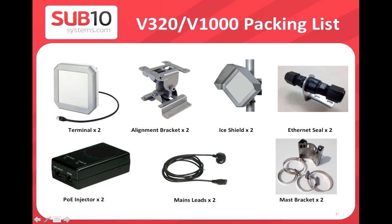Also included is the mast bracket for easy installation. The bracket has four holes connecting to the alignment bracket with screws and nuts, plus a metal ring that fixes to the mast. Different sizes accommodate masts from 40 mm to 110 mm in diameter.